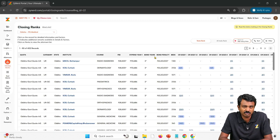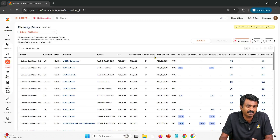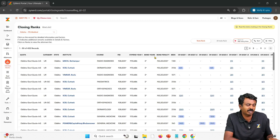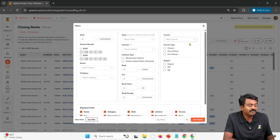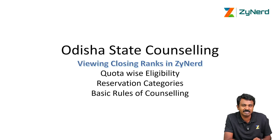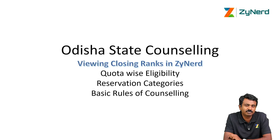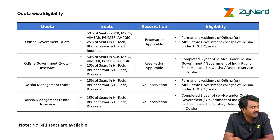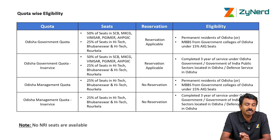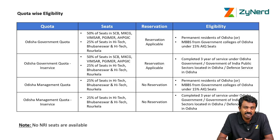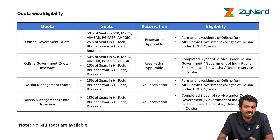If you have not gone through the all-India demo on how to look at closing ranks, the entire demo of Zynerd on closing ranks, please have a look at it to understand how everything works. Currently we will be looking at how to view Odisha quota-wise eligibility and reservation categories so you can select the right options when filtering based on your eligibility.